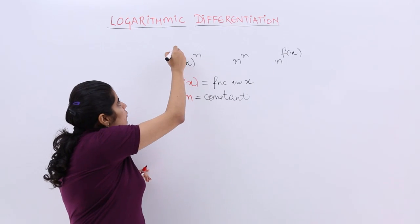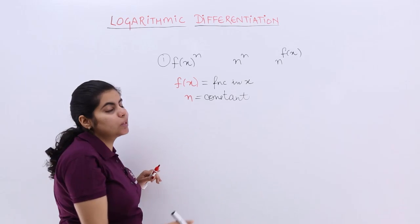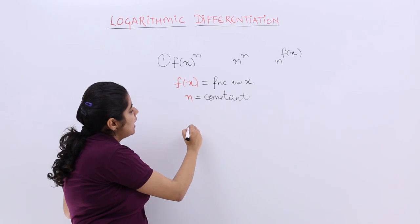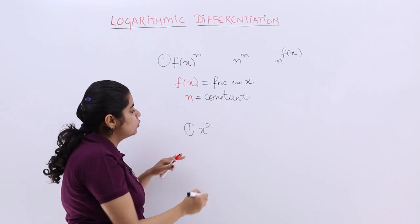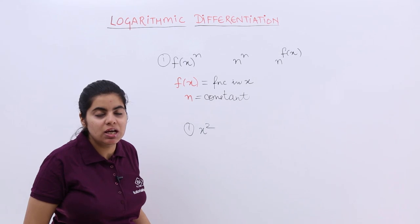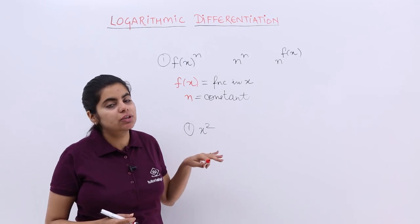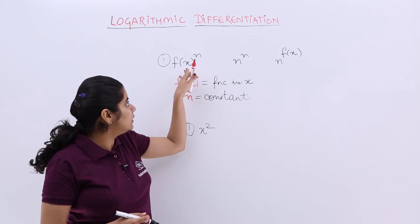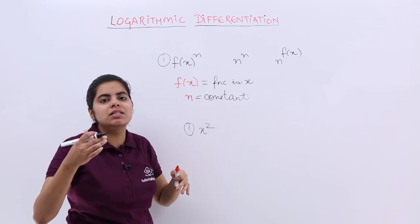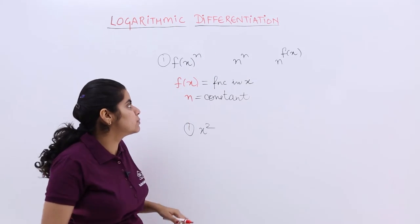Let me take an example for this. The first category is f(x) raised to the power n. That means say I have x square. You know how to differentiate x square, right? Because 2 is a constant, x is in x only, so the differentiation is 2x. So we have done x cube, x square, 3x square, something of that sort. This has been covered.